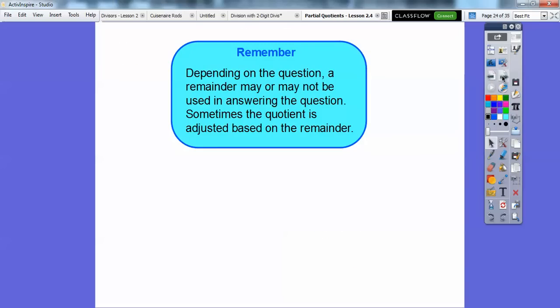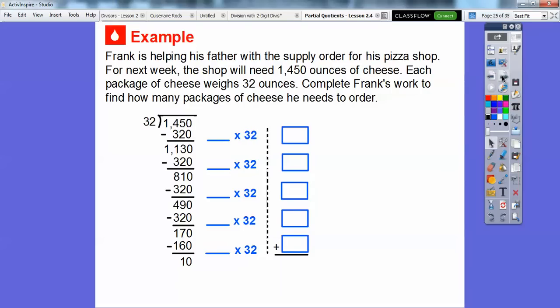Just remember, depending on the question, a remainder may or may not be used in answering the question. Sometimes the quotient is adjusted based on the remainder. Sometimes you use it and sometimes you don't. Here's an example. Frank is helping his father with the supply order for his pizza shop. For the next week, the shop will need 1,450 ounces of cheese. Each package of cheese weighs 32 ounces. So let's complete Frank's work to find how many packages of cheese he needs. He's doing 1,450 divided by 32.